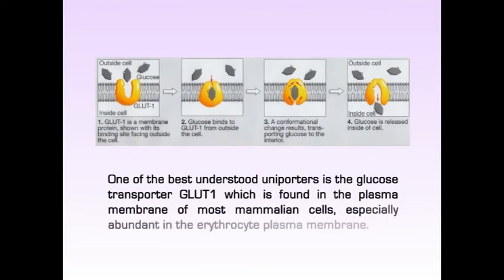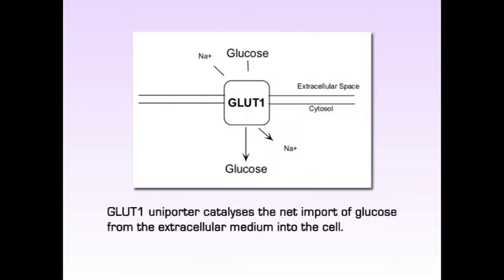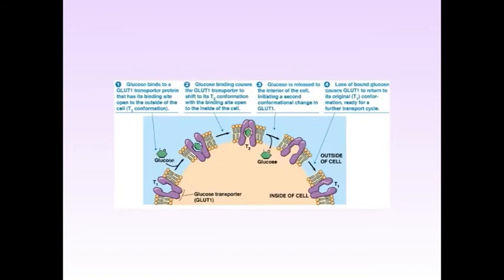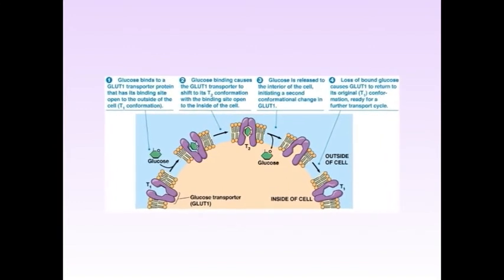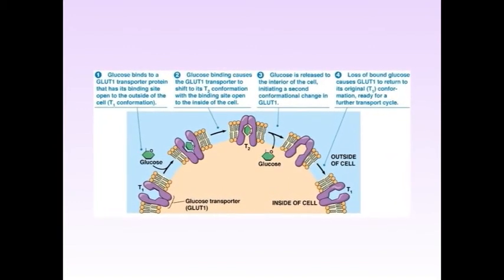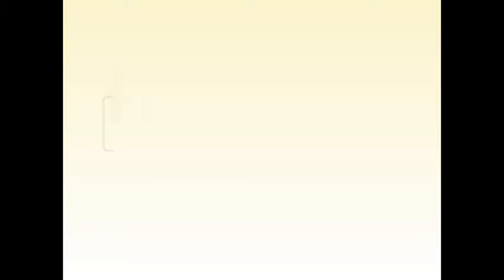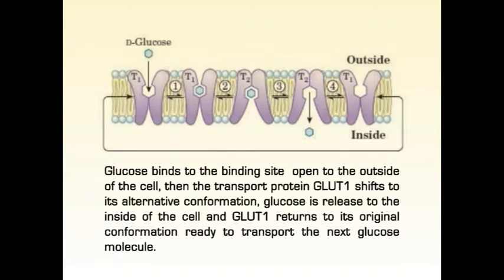One of the best understood uniporters is the glucose transporter GLUT1, which is found in the plasma membrane of most mammalian cells, specially abundant in the erythrocyte plasma membrane. GLUT1 uniporter catalyzes the net import of glucose from the extracellular medium into the cell. Glucose binds to the binding site open to the outside of the cell, then the transport protein in GLUT1 shifts to its alternative conformation, glucose is released to the inside of the cell, and GLUT1 returns to its original conformation ready to transport the next glucose molecule.